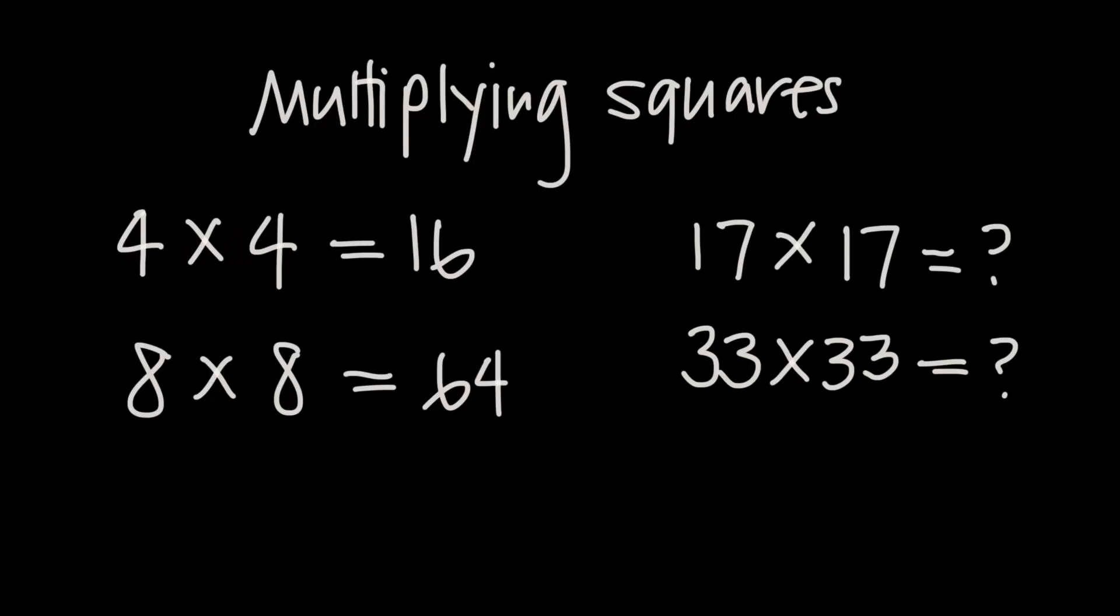And that's why I want to show you a trick for multiplying larger square numbers together. Now the squares have to be equal to one another, so we have to have 33 times 33 or 17 times 17. But in a problem like that, there is a quick way to find the product.